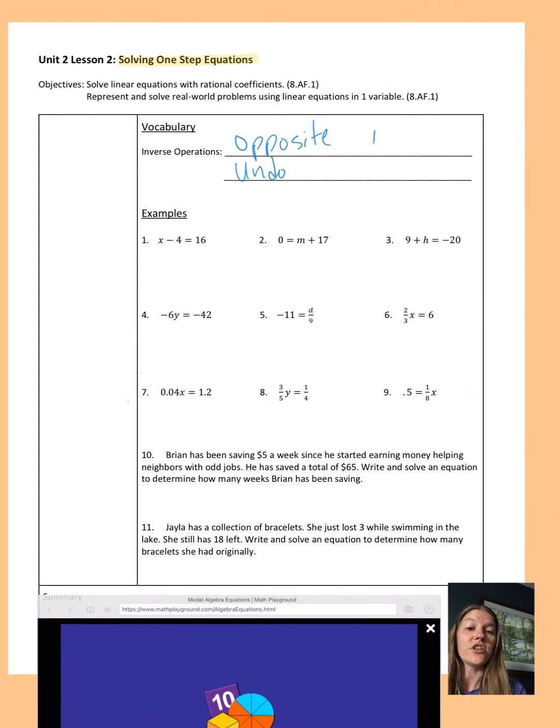For example, addition and subtraction are the opposite, they undo each other. I can give you three pieces of candy, addition, and to undo it I would take away three pieces, subtraction. Also, multiplication and division are opposite operations, or they undo each other.